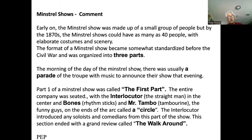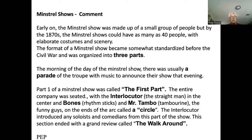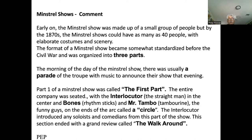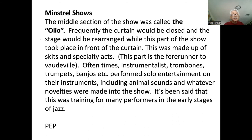A traveling minstrel show would come to town, and in the morning they'd hold a parade through the streets — remember, there was no TV, no movies. You'd see the parade and decide to go to the show that night. The show grew into three parts. In the first part, maybe 30 to 40 people sat on stage in a circle, singing songs. There was a man on the right and left acting as jokesters, and an MC called the interlocutor who played the straight man.